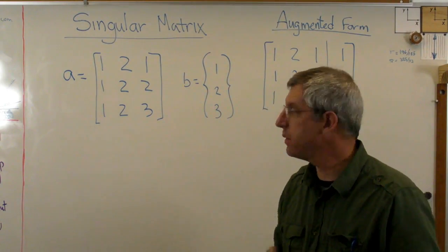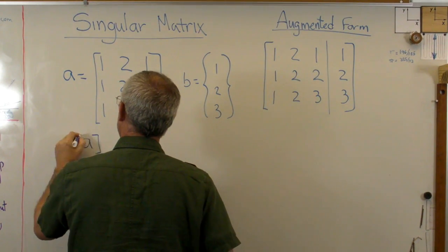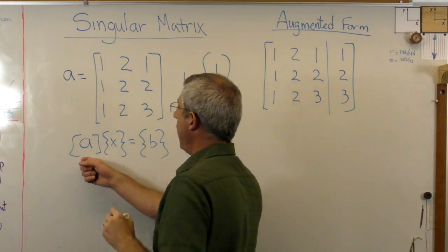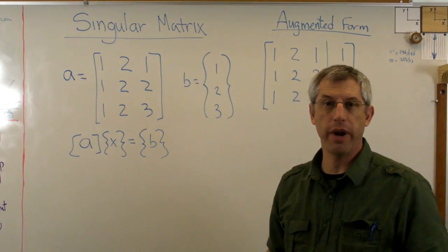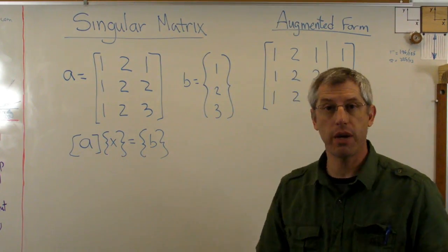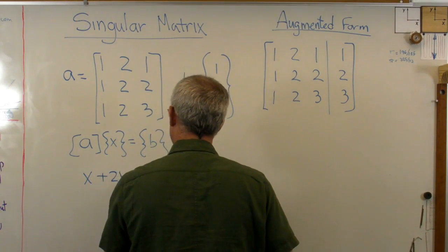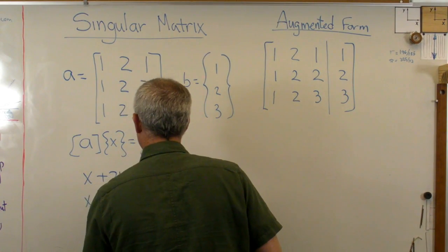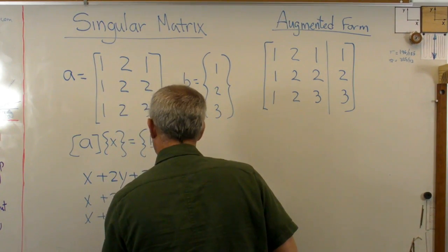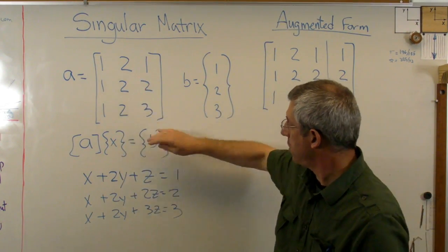Just to make sure we know what matrix form is, this is a matrix and this is a vector. This is a system of linear equations and we would write it down in matrix notation in this form, where A is this matrix, B is this vector. Remember a vector is just a matrix that only has one column in it. And I've got a vector of unknowns. If I wanted to write this out in its original algebraic format, it would look like x plus 2y plus z equals 1, x plus 2y plus 2z equals 2, and x plus 2y plus 3z equals 3. So there it is in algebraic form and there it is in matrix form.